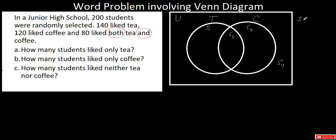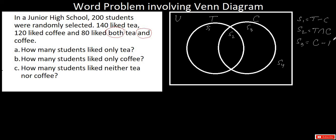S1 is the operation T minus C. S2 is the intersection of set T and set C — so here at the middle, T intersection C. S3 is the operation C minus T, and S4 is the complement of the union of set T and set C.